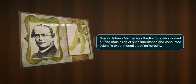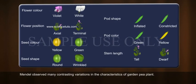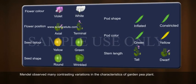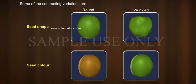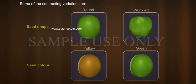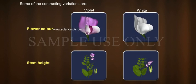Gregor Johan Mendel was the first one who worked out the main rules of such inheritance and conducted a scientific experimental study on heredity. Mendel observed many contrasting variations in the characteristics of the garden pea plant. Some of the contrasting variations are: seed shape — round or wrinkled; seed color — yellow or green; flower color — violet or white; stem height — tall or dwarf; and so on.